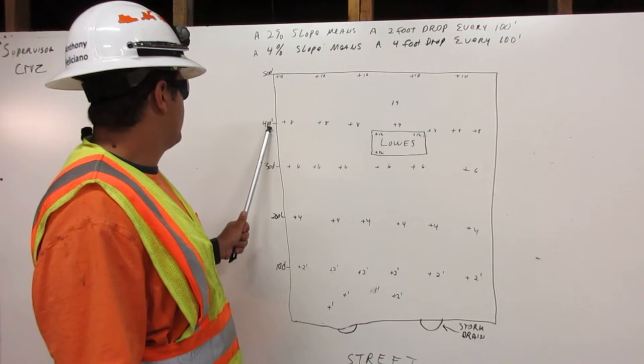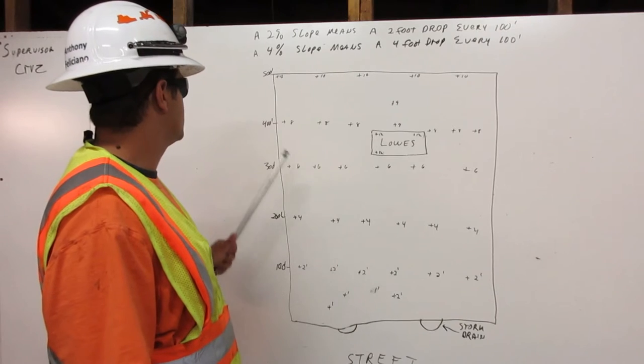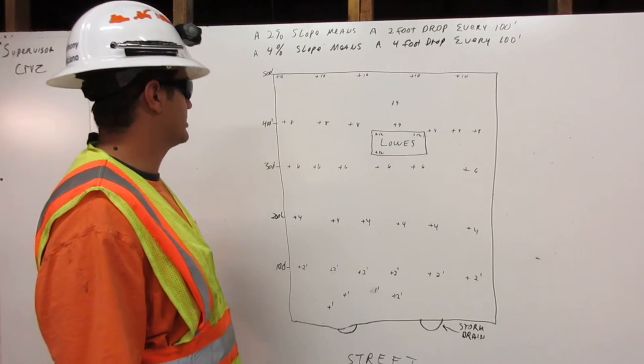Then we go to the 400 feet mark. It is 8 feet higher than the storm drains. Then we go back to the 500 feet. It is 10 feet higher than the storm drains.